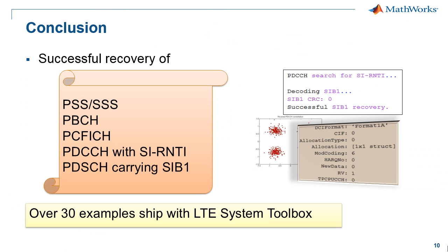Let me summarize what we have just seen. We have had a look at the way system information is being broadcast in LTE. We then used LTE System Toolbox to extract MIB and SIB1 from an actual LTE signal, and we have done so with under 150 lines of MATLAB code. This example provides a small window into the nearly 200 functions that LTE System Toolbox is comprised of, and it is one of over 30 examples that ship with LTE System Toolbox.